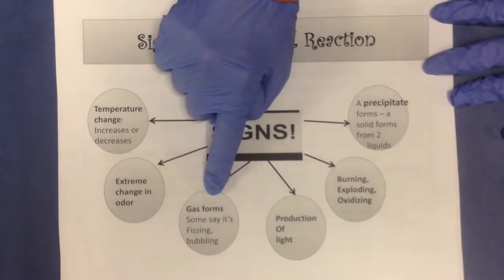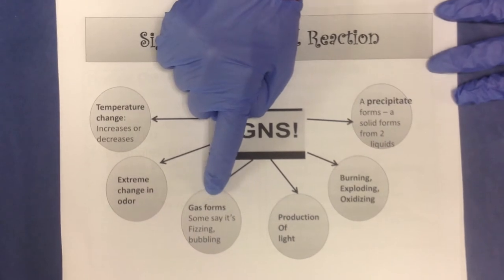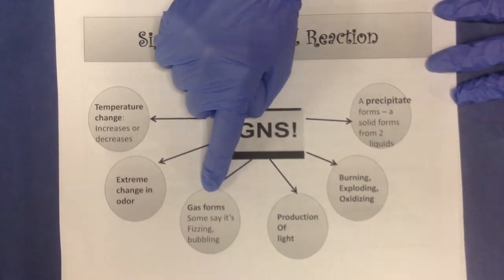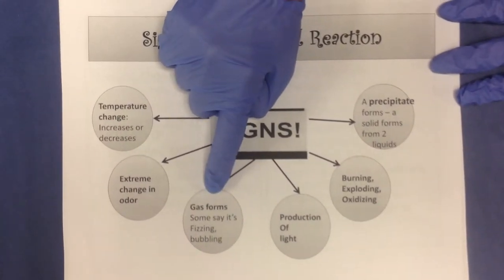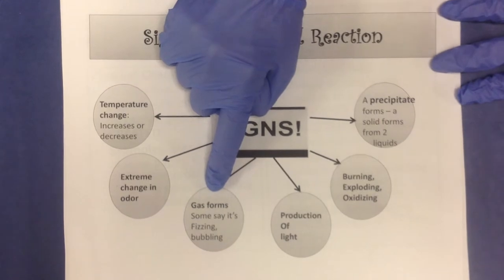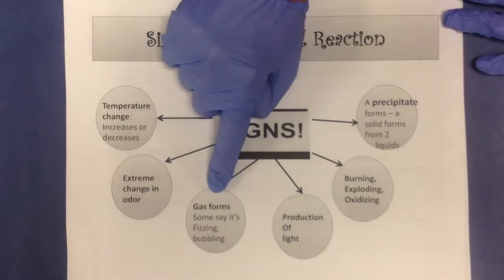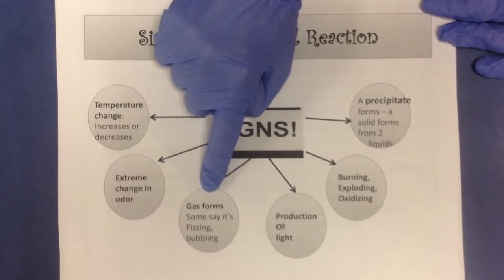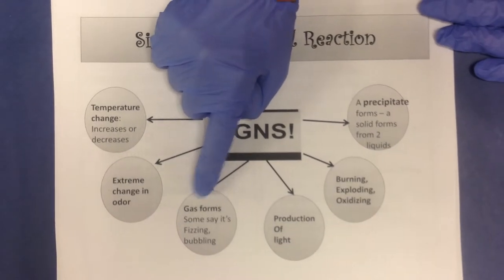Gas formation: when you see bubbling, or when you say it's fizzing — that is actually when we're forming a gas. Usually it's carbon dioxide. Gas is formed as a product of some of these chemical reactions.